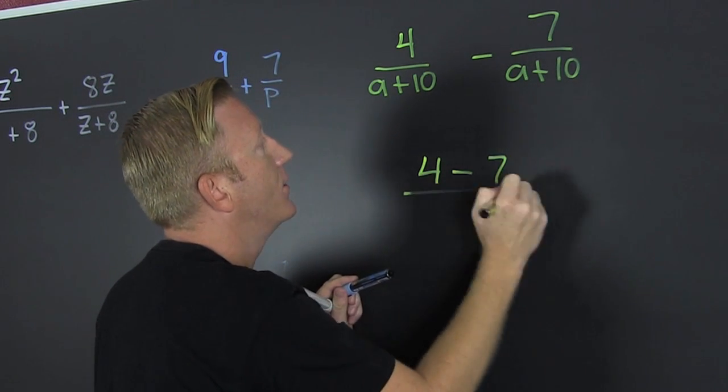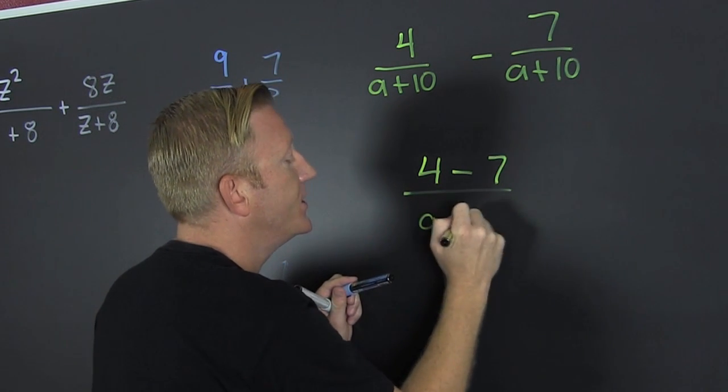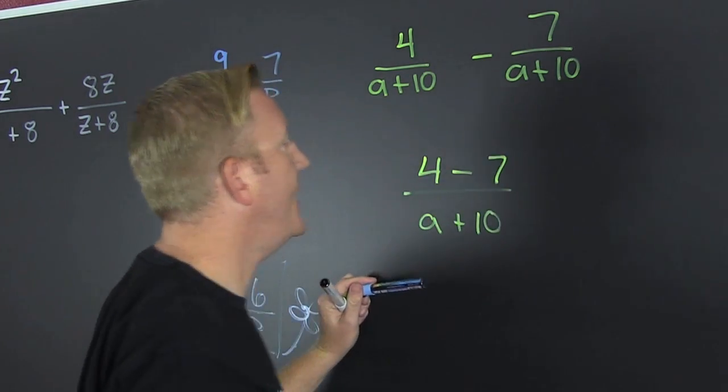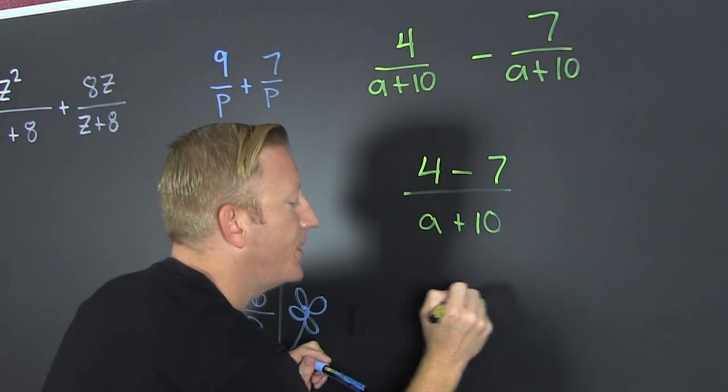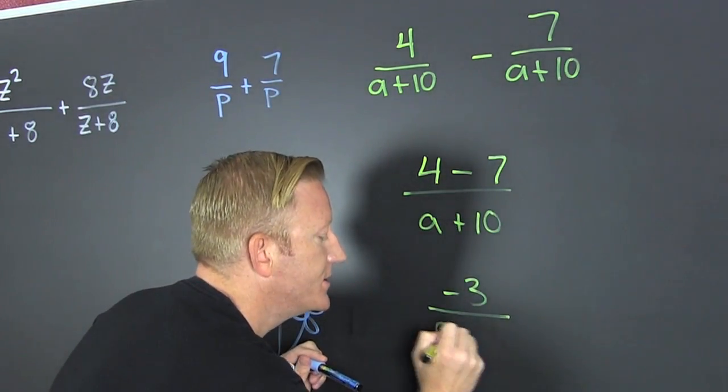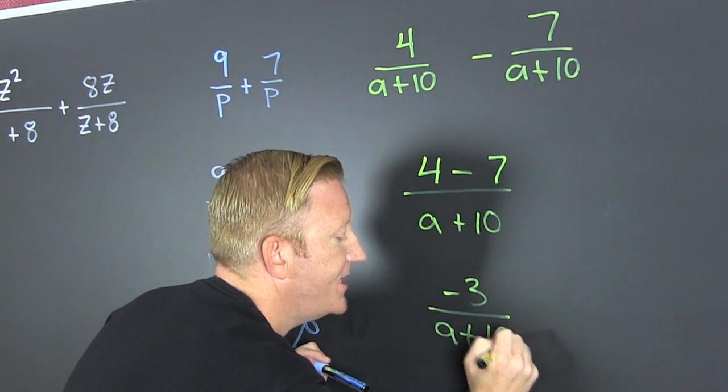That's 4 minus 7 all over that common denominator A plus 10. 4 minus 7 is minus 3 over A plus 10 then.